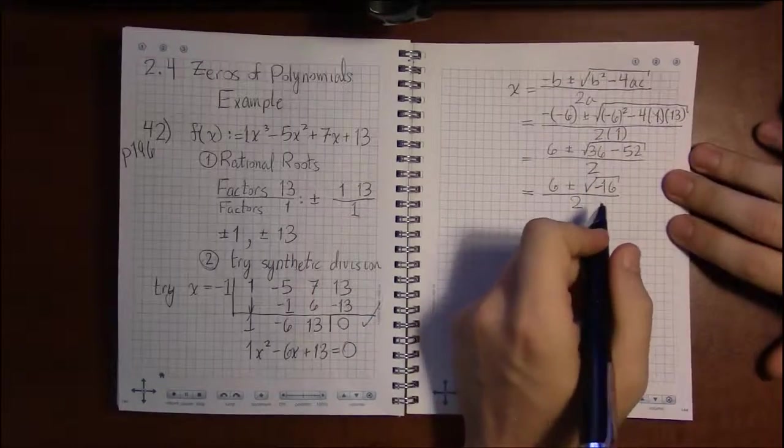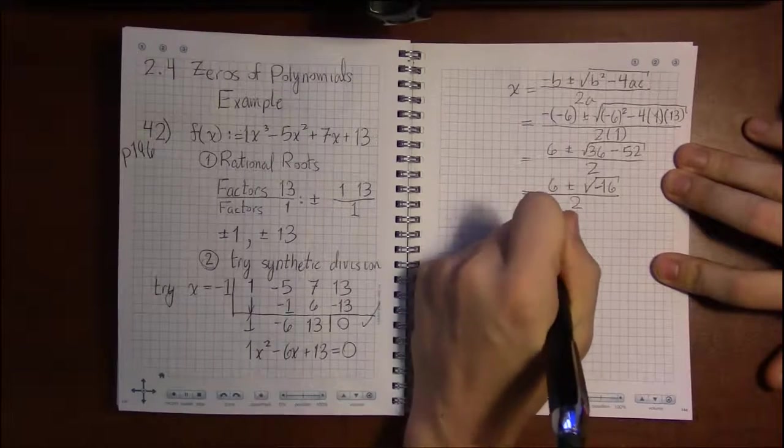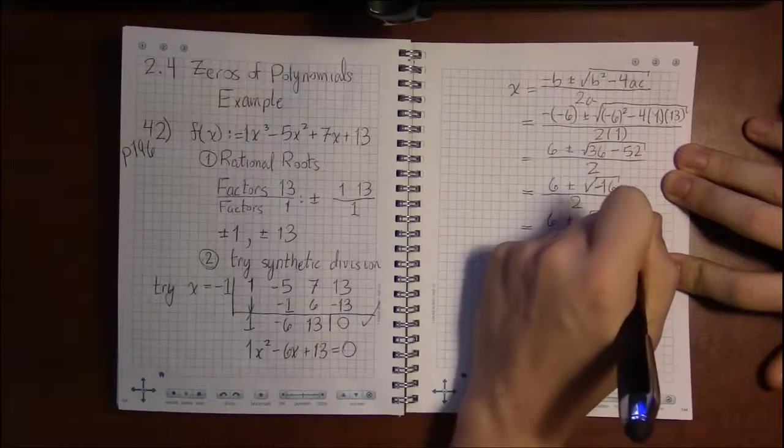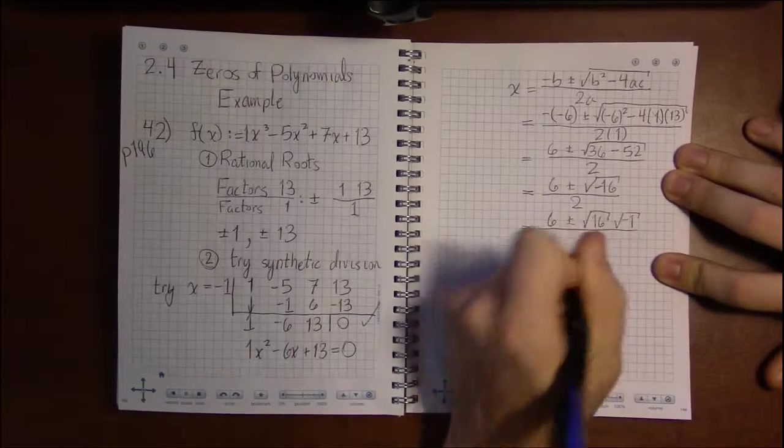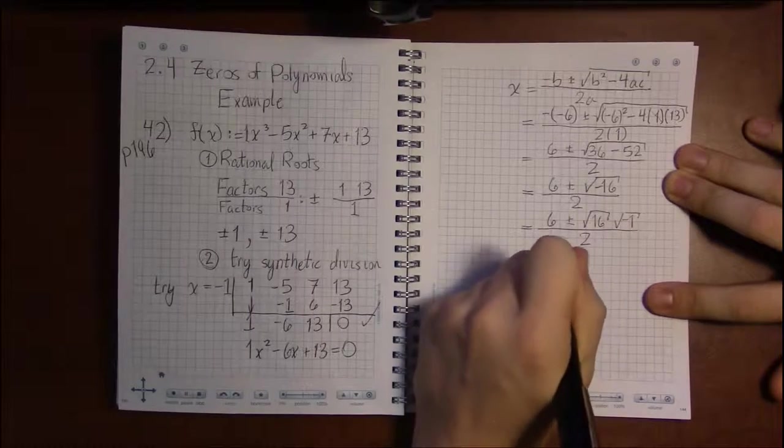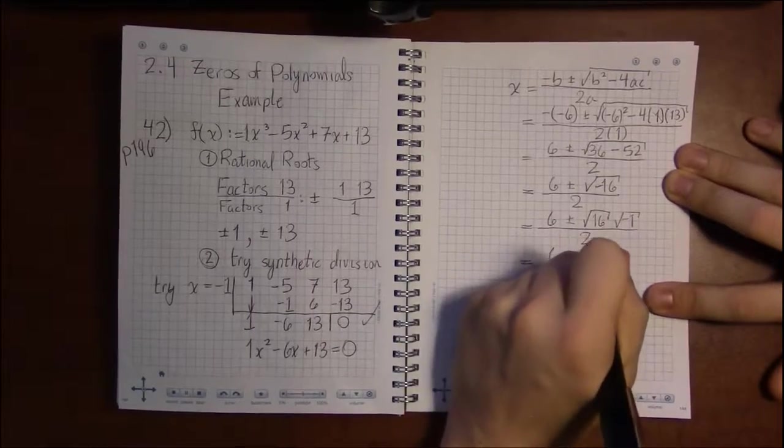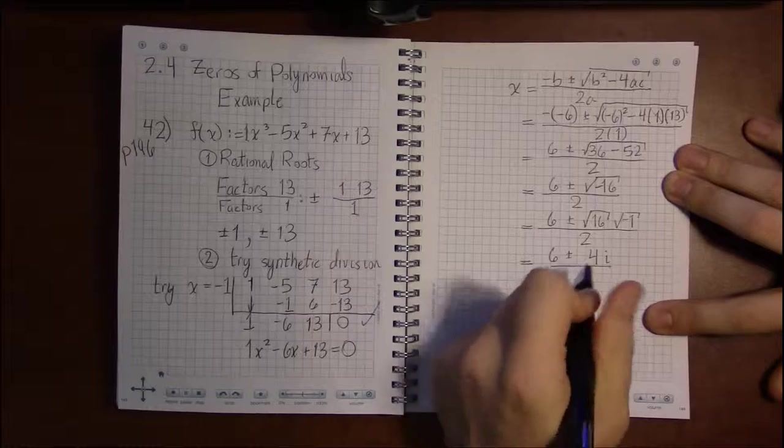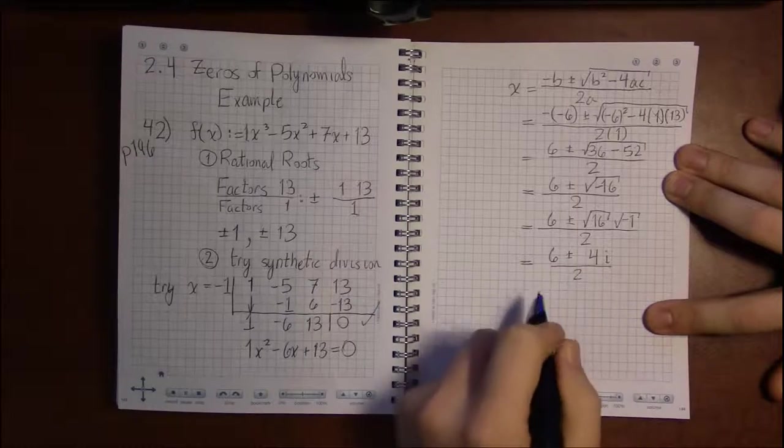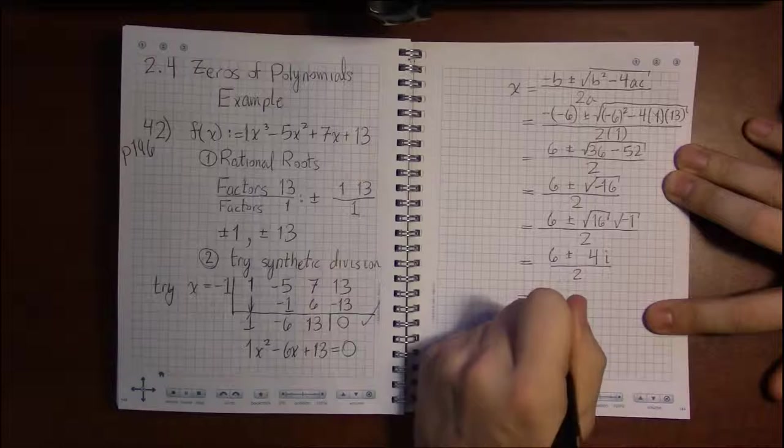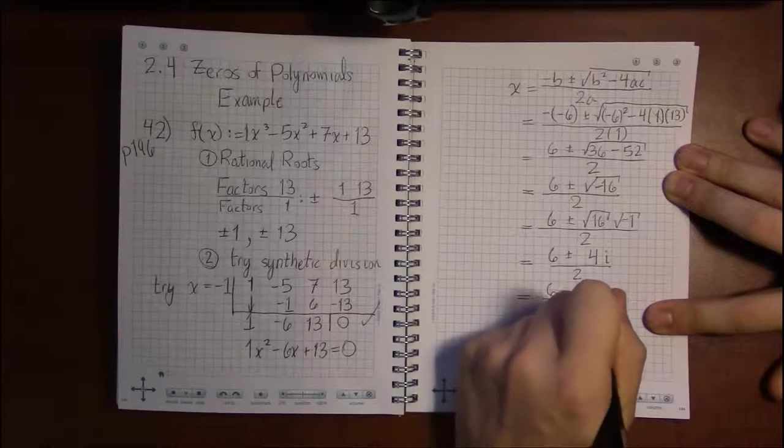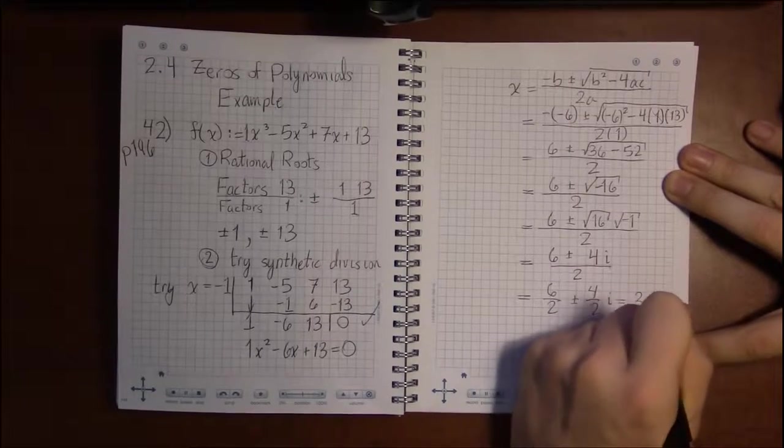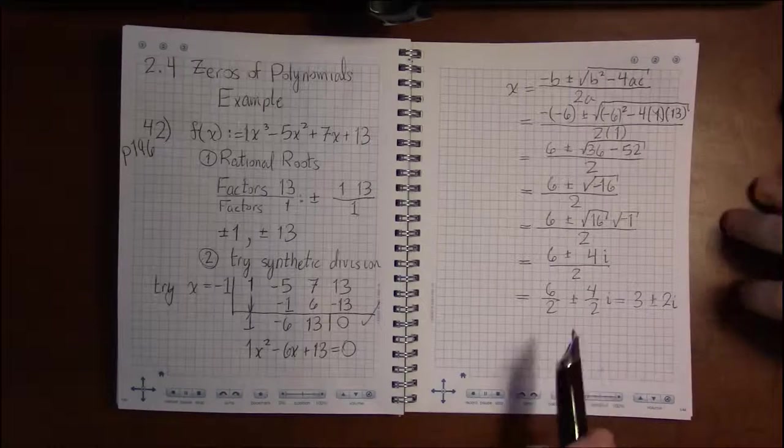Square root of minus 16 can be broken up into the square root of 16 times the square root of minus 1. Using our new friend i, we can write this as square root of 16 is 4 and square root of minus 1 is i. Putting the 2 under everything, 6 over 2 plus or minus 4 over 2i, we are left with 3 plus or minus 2i.